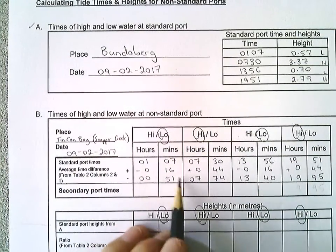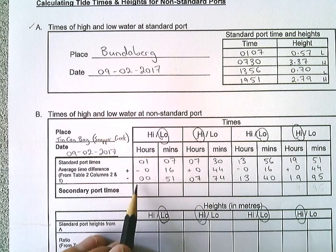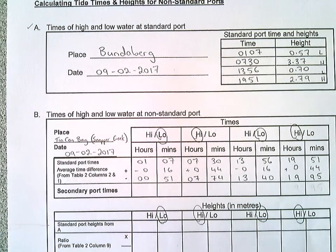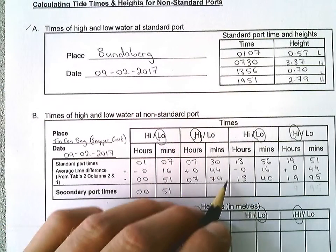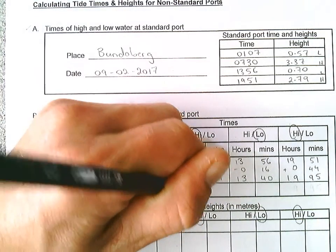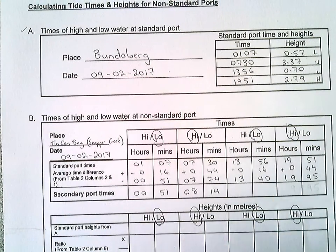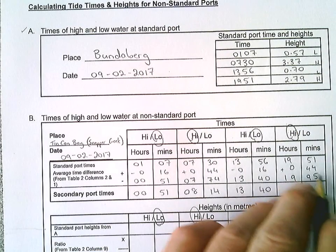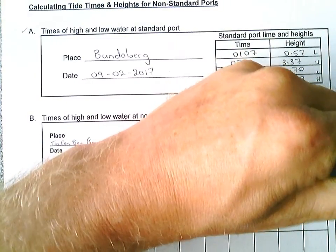Now we want to check whether these times make sense. If the minutes are greater than 60, we have to convert them to hours. This one here is fine because we've only got 51 minutes. But where we had 74 minutes, we take 60 minutes and convert that to an extra hour, which gives us 14 minutes remaining. Similarly, 1995 — that's bigger than 60 — so we take another hour across, giving us 35 minutes remaining.